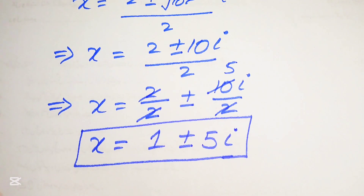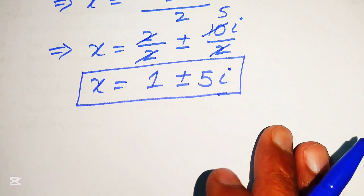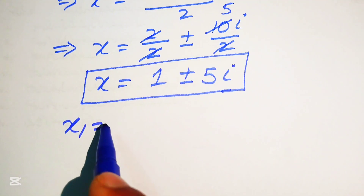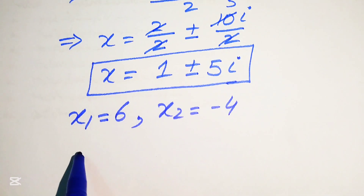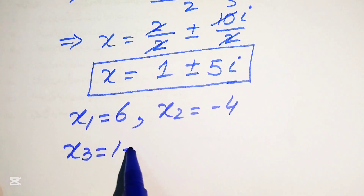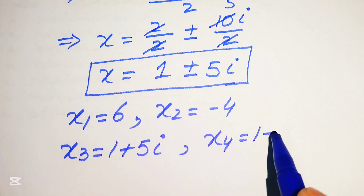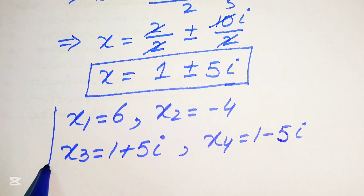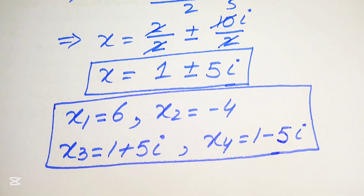Finally, the four roots of the given fourth-order equation are: x₁ = 6, x₂ = -4, x₃ = 1 + 5i, and x₄ = 1 - 5i. These are all four roots as expected for a fourth-order equation. Thank you for watching — please subscribe for more videos.